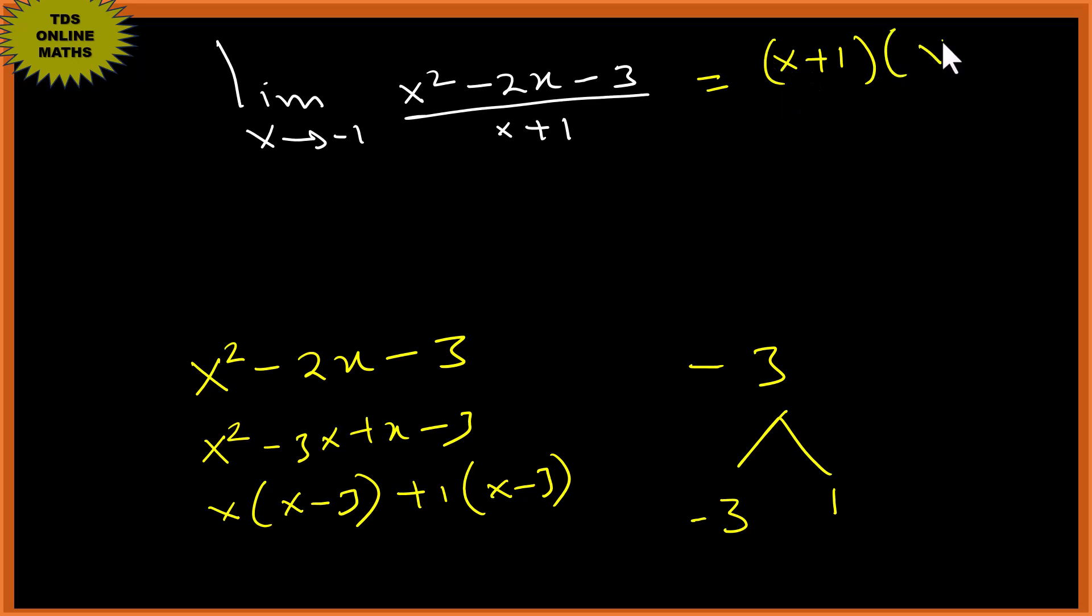times (x minus 3) over (x plus 1). Alright, so going forward this one will cancel this, so